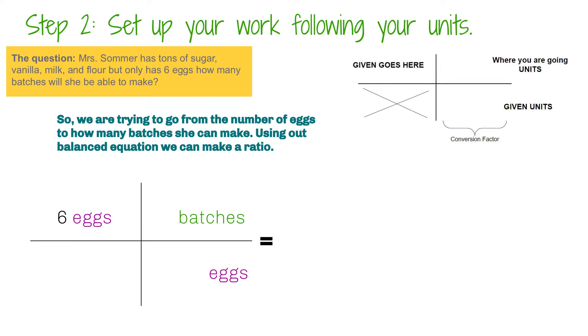So step 2 is I need to set up my work to follow my units. So we're going to try to go from the number of eggs to how many batches I can make. So using our balanced equation, we can make a ratio. So I have 6 eggs equals how many batches over 4 eggs. So this is my conversion factor that I'm going to need to figure out what that is in order to solve the problem.